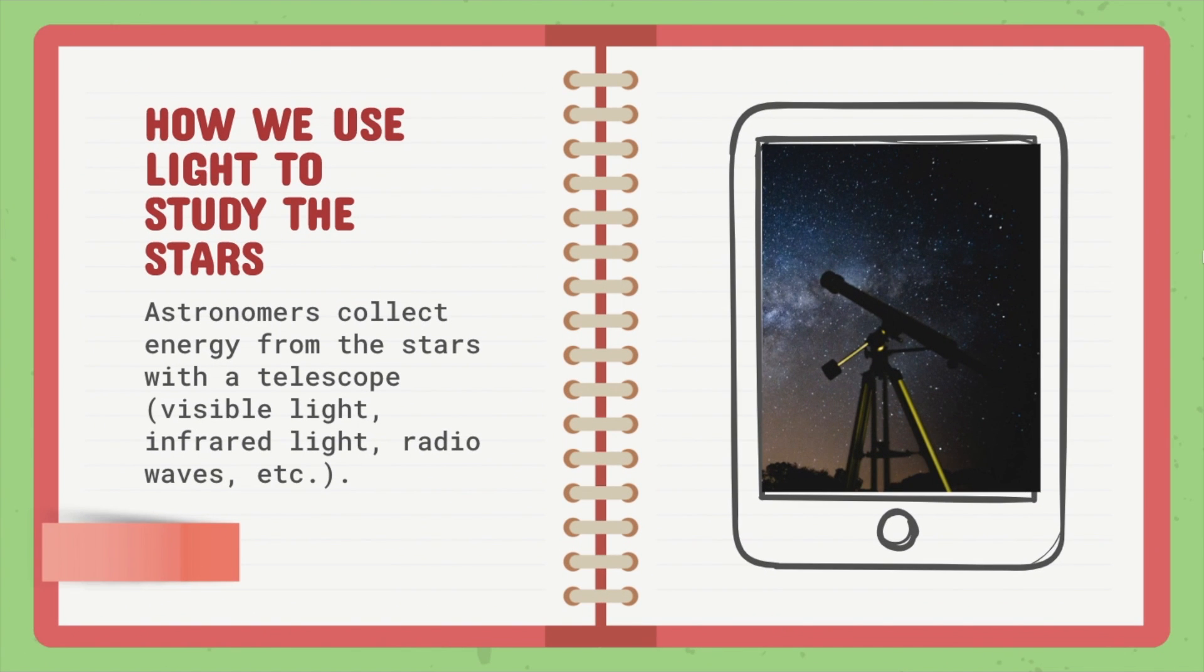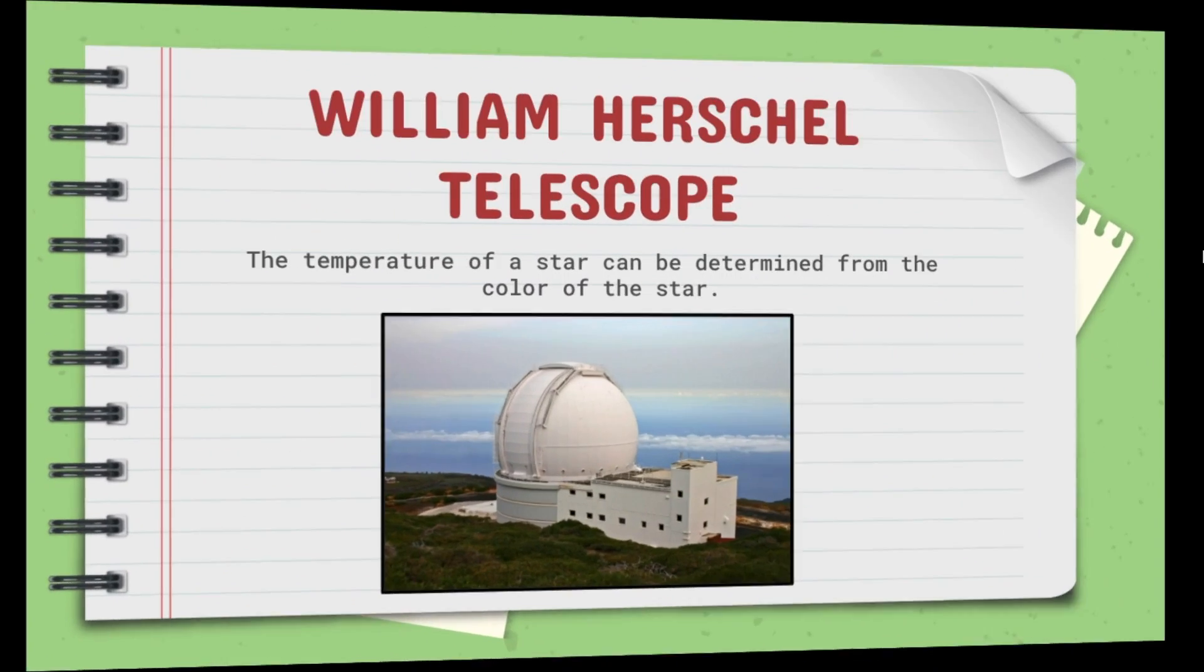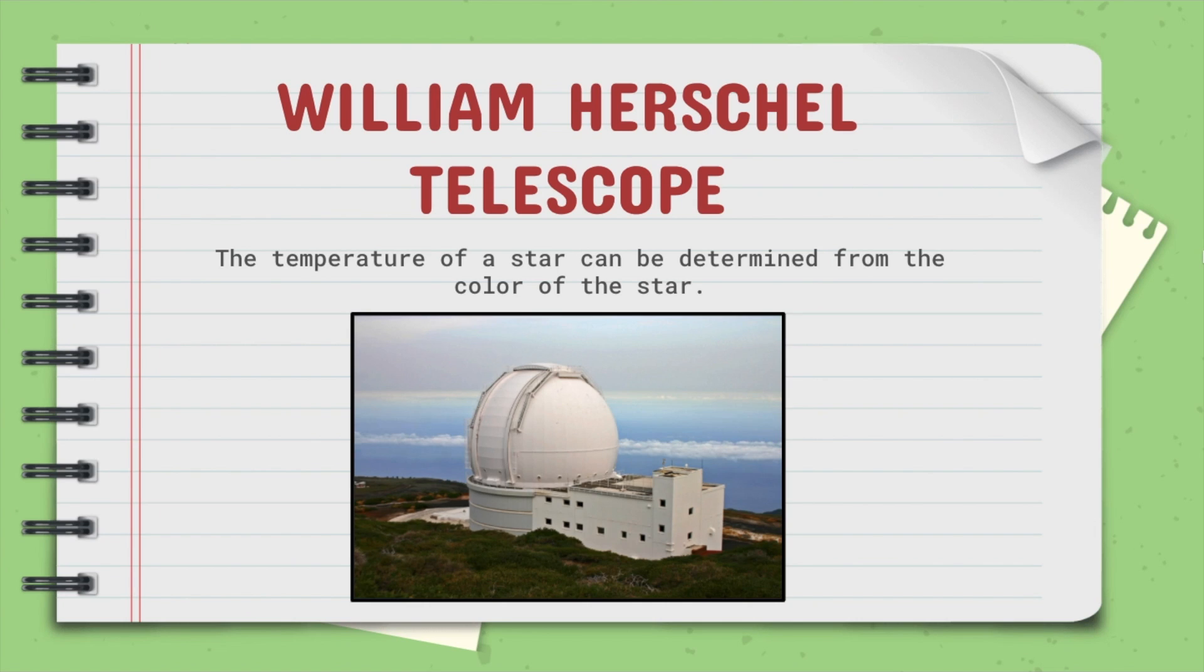How we use light to study the stars. Astronomers collect energy from the stars with a telescope. They use visible light, infrared light, and radio waves, just to name a few. The William Herschel Telescope in the Canary Islands in Spain also looks for that visible light. The temperature of a star can be determined from the color of the star.